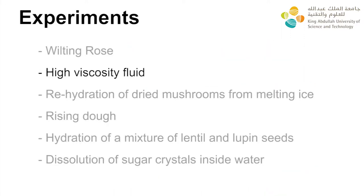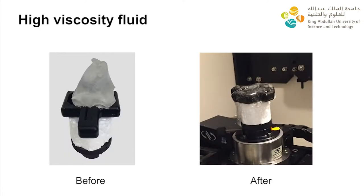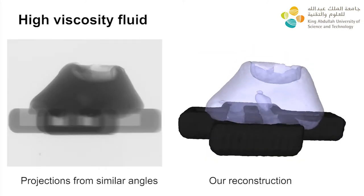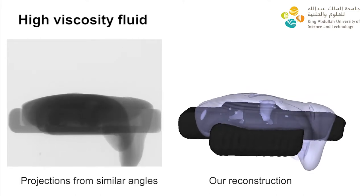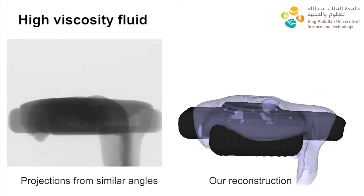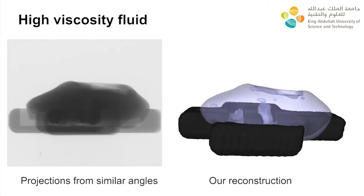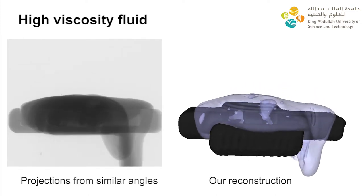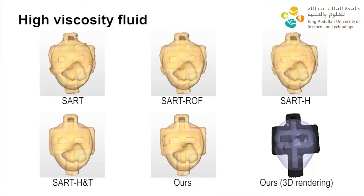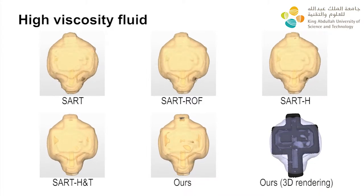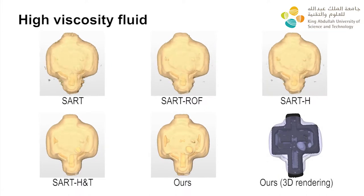Our second dataset represents the flow of a high-viscosity transparent fluid scanned during 2 hours and 12 minutes. On the left, we illustrate a rapid succession of projections acquired during the scanning process from similar viewing angles. On the right side, a 3D rendering of the fluid flow is given for approximately the same angle. In this sequence, we compare our method to four different variants of the SART algorithm using different priors.